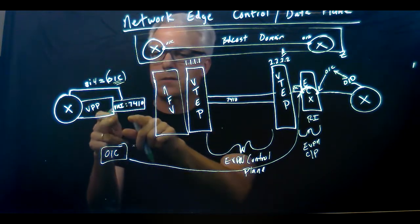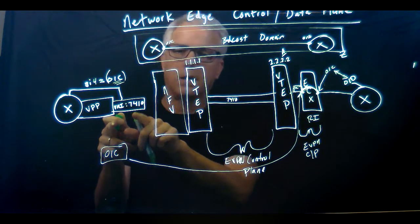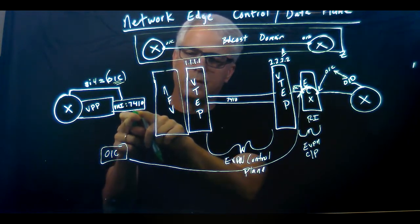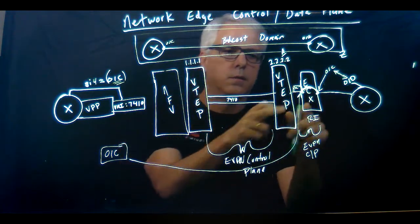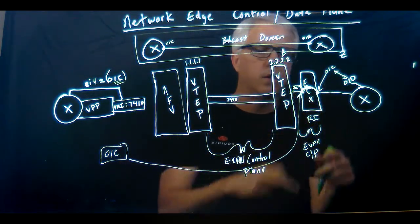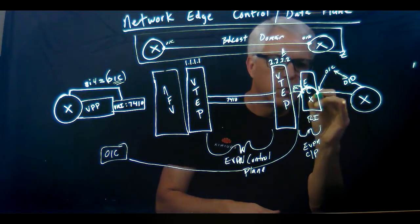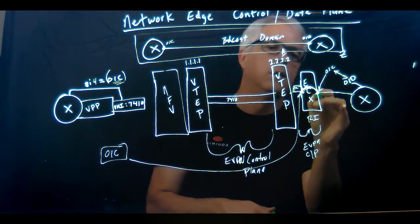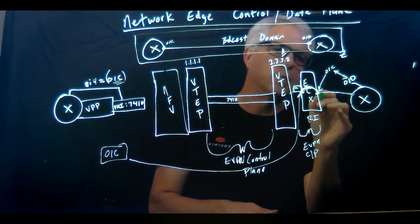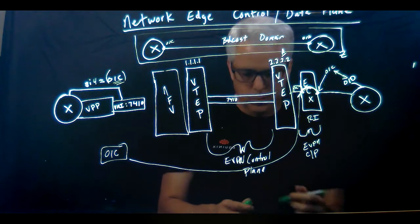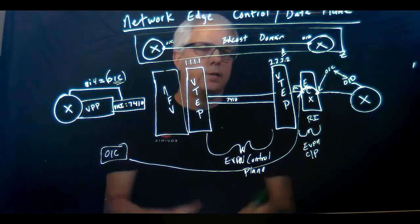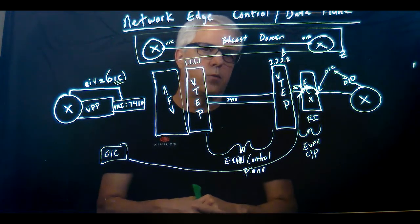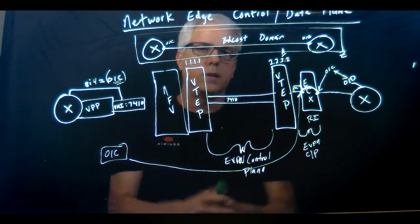Then we take this VXLAN network identifier and stuff the VNI 7410 across this EVPN infrastructure. It stops here and we have to create another EVPN infrastructure using a route instance, so it shows up right here on this interface. Once it shows up on this interface, it's going to broadcast this 01C MAC address out to the respective cloud provider. It's pretty complicated, but it works — you don't really have to worry about it.